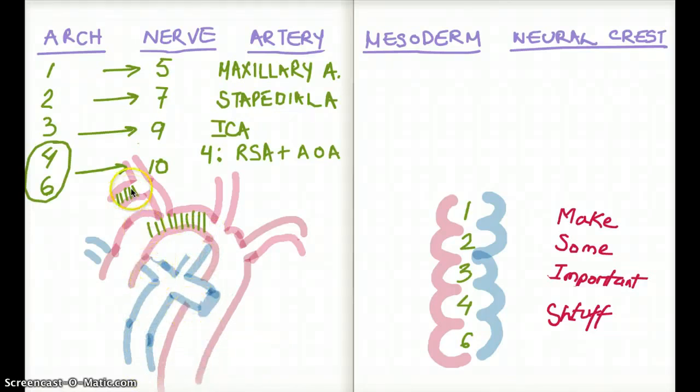Also notice that the right subclavian artery is stemming from the common carotid where the left subclavian artery is coming from the distal end of the arch of aorta. So that is a little anatomical difference between the two. So anyways, let's go back to our brachial arch 4. That gives rise to right subclavian artery and arch of aorta.